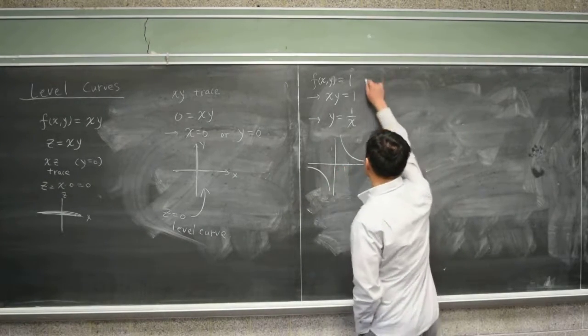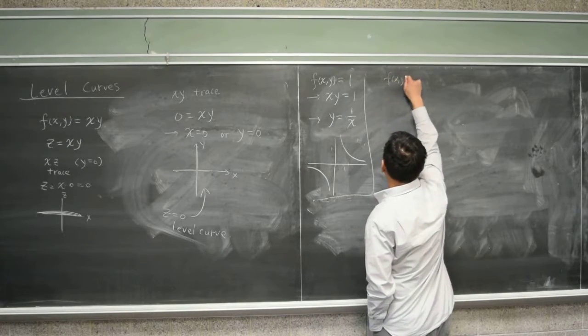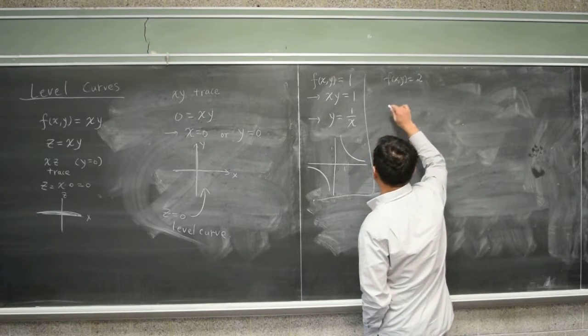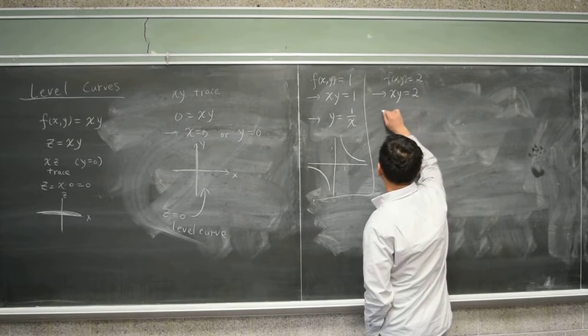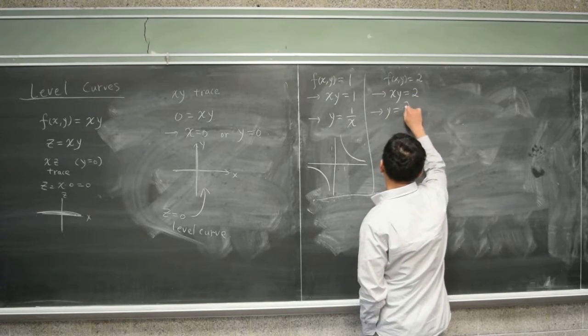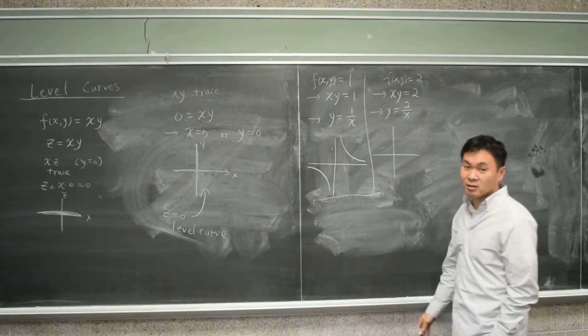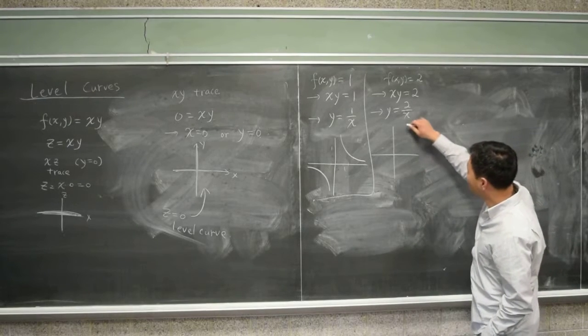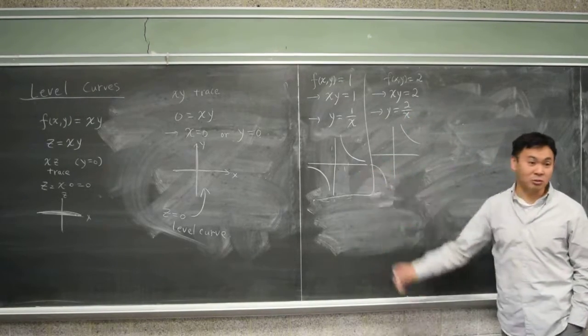And then, if you set f(x,y) equals to two, that's x times y equals to two, which means y is equal to two over x. And it's nothing more than a similar type. It's just bigger numbers. So it's just further away from the origin than this one.